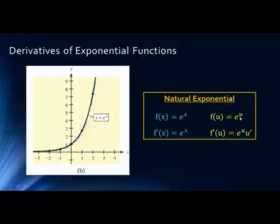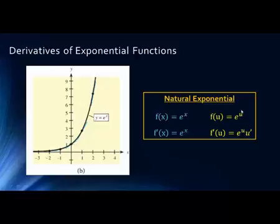If we have a function in the exponent — that is, F of U equals e to the U, where U is some function of x, not just the variable x — then the derivative is still e to that same exponent, but times the derivative of the exponent. You can think of this as the chain rule: first take the derivative of the outer function, which is e to the U (same result), times the derivative of the inner function, which gives us U prime.